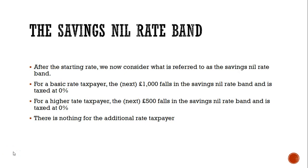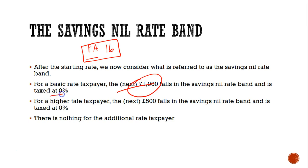Welcome to the second lecture. After the starting rate, the government also decided to award another thousand pounds at zero percent — introduced in Finance Act 2016. So if you've enjoyed some starting rate, the next one thousand can also be enjoyed at zero percent. If you haven't enjoyed any starting rate because the person had quite a bit of non-savings income greater than five thousand, then the first thousand pounds of your savings will enjoy this nil rate band at zero percent.